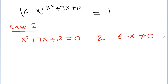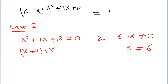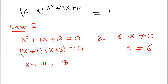From 6 - x ≠ 0, we get x ≠ 6. Factoring x² + 7x + 12 (where 7 = 4 + 3 and 4 × 3 = 12), we get (x + 4)(x + 3) = 0, giving x = -4 and x = -3. Both -4 and -3 are not equal to 6, so both are valid solutions.